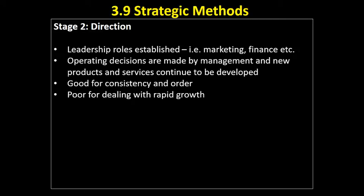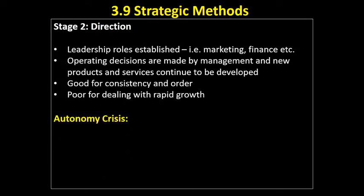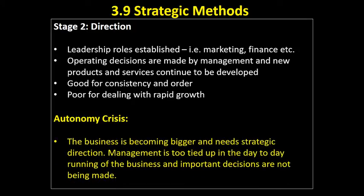However, it's going to be poor for dealing with rapid growth, because we're still developing new products and services and new business inquiries are coming in. The organisation is constantly growing, and we're coming to a stage where we may need to delegate some authority to people. The business is becoming bigger and needs strategic direction. Management has been too tied up in the day-to-day running of the business, and at this stage the organisation has got too big for that. We need clear strategic direction and to delegate some authority down the structure.